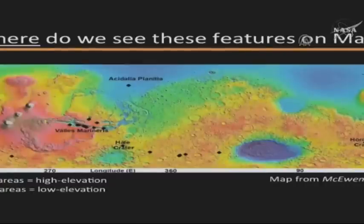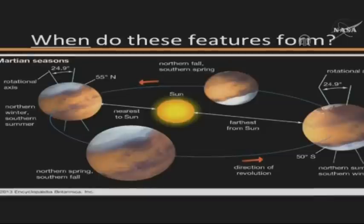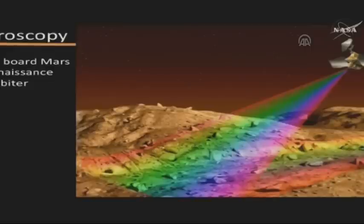This just shows Mars and its orbit around the Sun, and this is to explain a little bit about why we see these features at different times in different places. In the slide there's an orbiter shooting rays down, and that's basically what spectroscopy is.